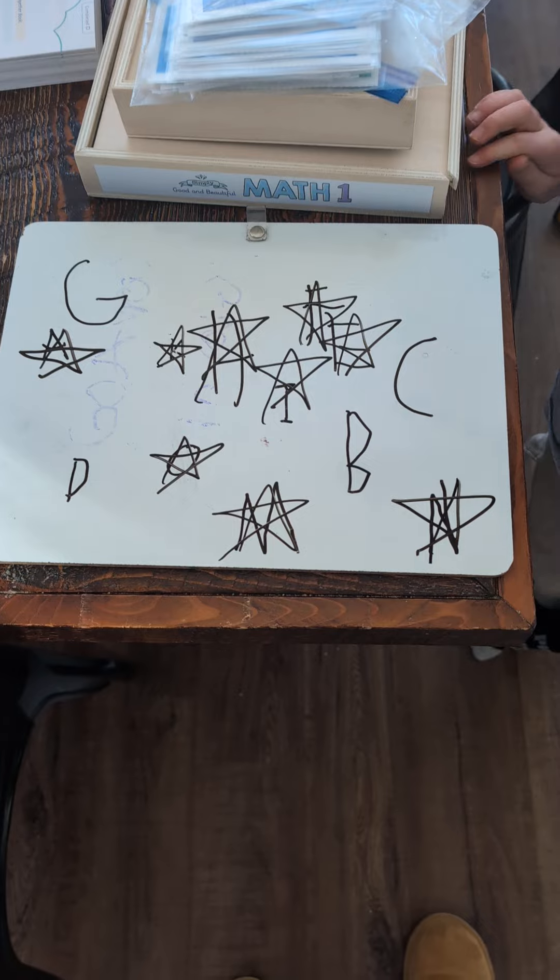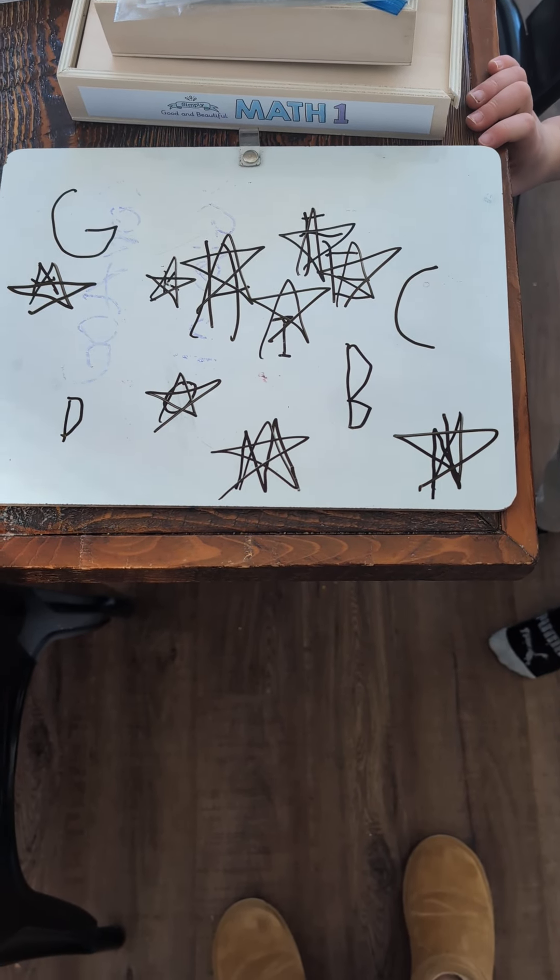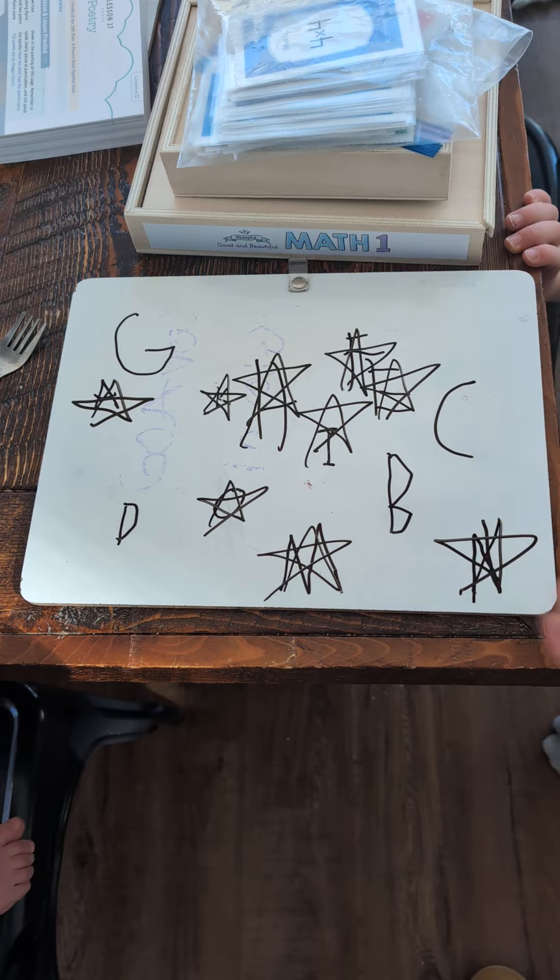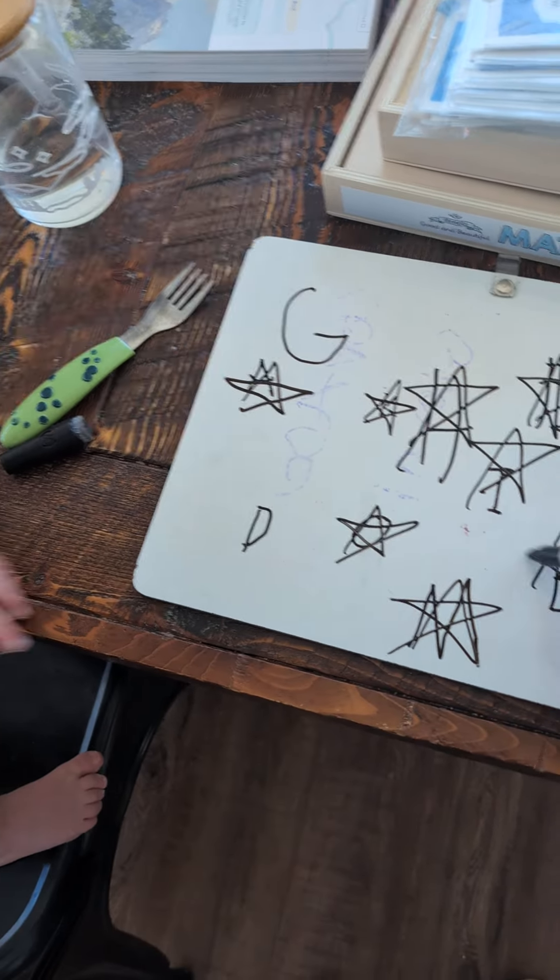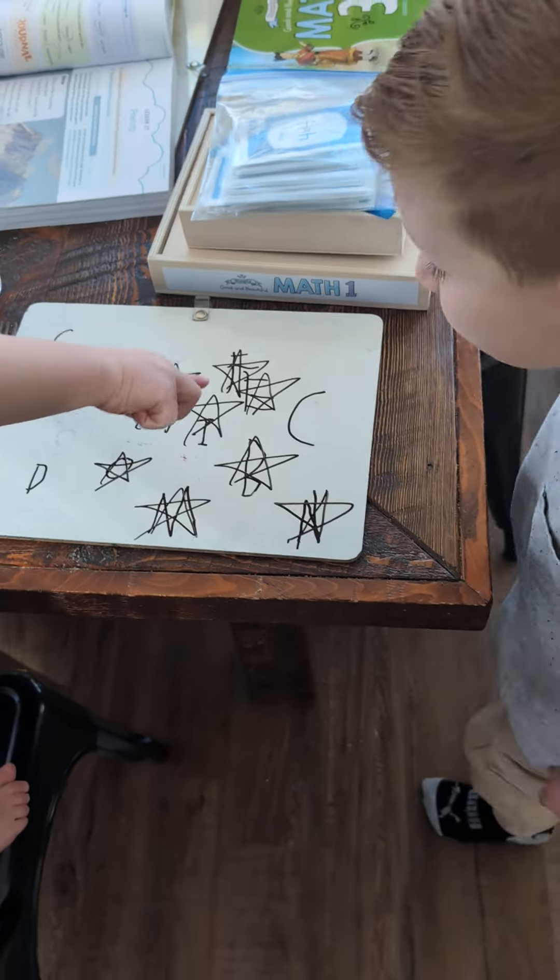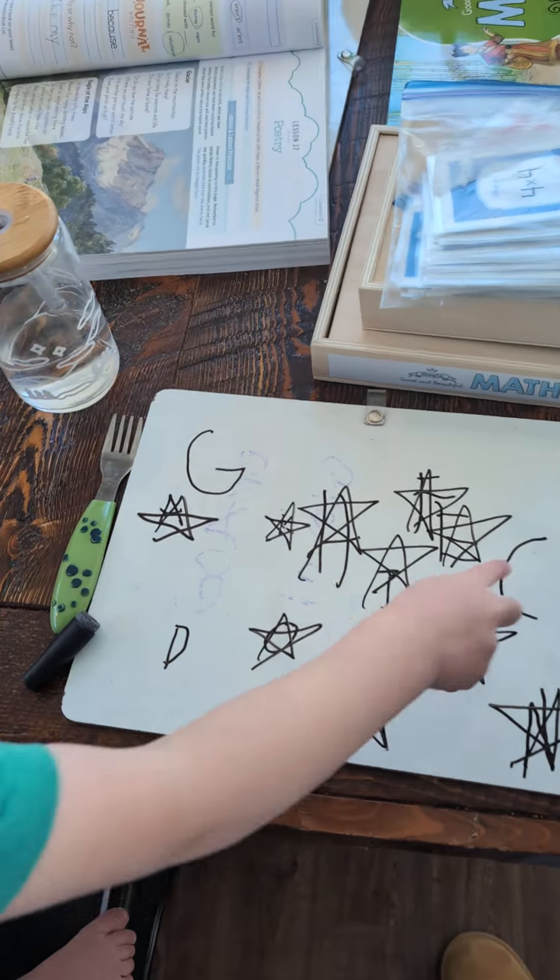Oh, what's that? Find B for Benny. Where's B for Benny? Where? Touch it. Yeah. Okay, what's next? C for cat. I'm ready. Okay.